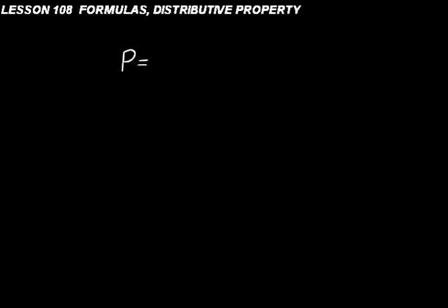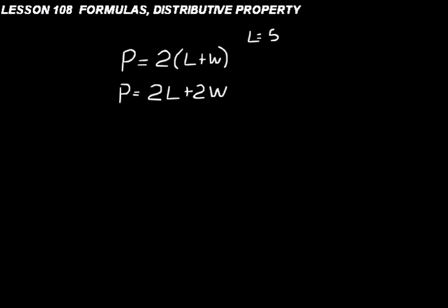Let's go on to the second part of this lesson on what's called the distributive property. You may notice in the table in this lesson that there are two formulas for the perimeter of a rectangle: P equals 2 times (L plus W), and also P equals 2L plus 2W. Let's say that L equals 5 and W equals 2.